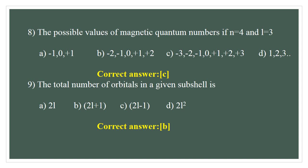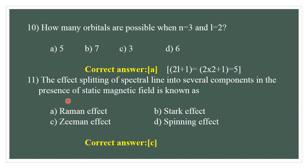How many orbitals are possible when n = 3 and l = 2? The possible number of orbitals is equal to 5.